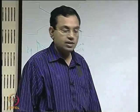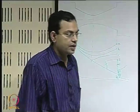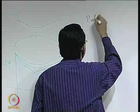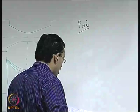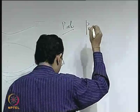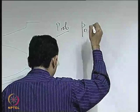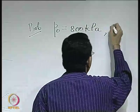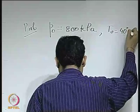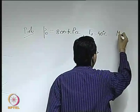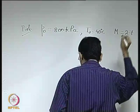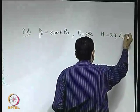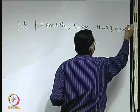In our previous lecture, we were discussing converging-diverging nozzles and let us work out an illustrative example on that. The problem is as follows: a converging-diverging nozzle is designed to expand air from a chamber in which P0 equals 800 kPa (the stagnation pressure), T0 equals 40 degrees centigrade, to give Mach number equal to 2.7 at the exit. The area of the throat is 0.08 meter square.